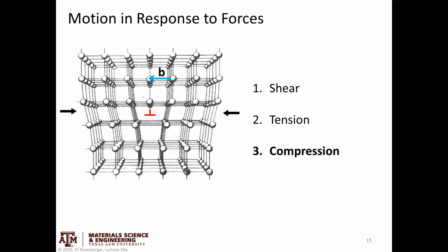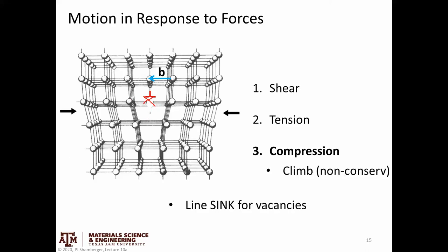Under compression, the edge dislocation could move upward, but the column of atoms would have to diffuse outward. Equivalently, a vacancy could diffuse in and consume one of those atoms. That is also non-conservative motion and less likely to happen.